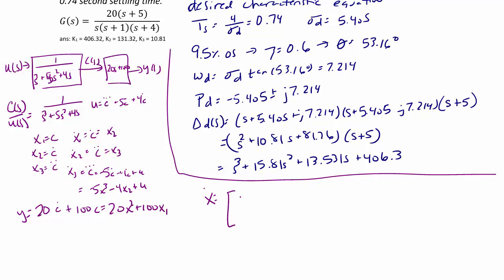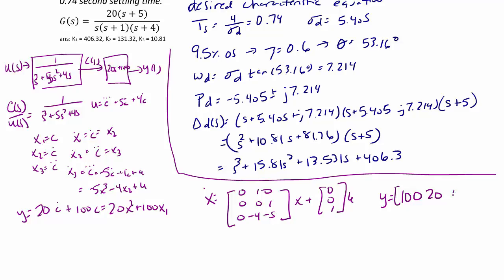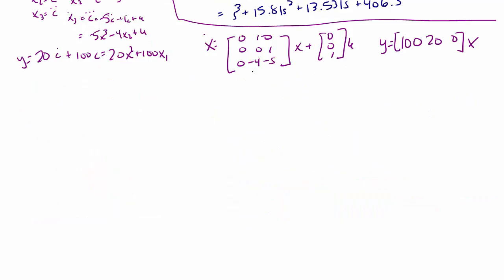We can now write the state equations. The matrix A is [0, 1, 0; 0, 0, 1; 0, negative 4, negative 5], B is [0; 0; 1], and C is [100, 20, 0]. Now that we have A, B, and C, the next step is to calculate A minus BK.